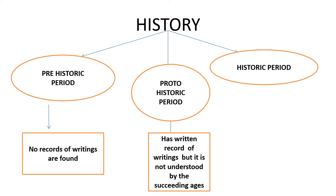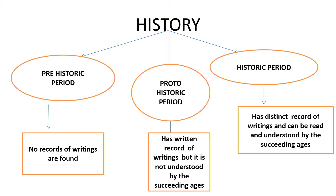Proto-historic period is a period which has written records of writings, but it is not understood by the succeeding ages. Example for this can be the Harappan civilization. The third period is historic period. Historic period is a period which has distinct record of writings and can be read and understood by the succeeding ages. This is how our history is being divided into three parts based on the writings or the script.